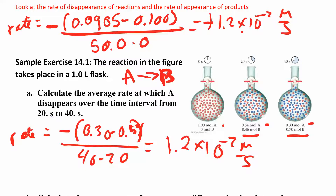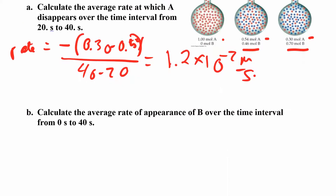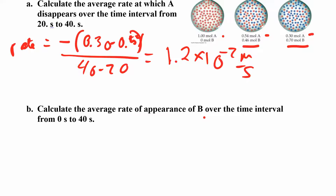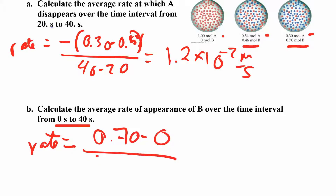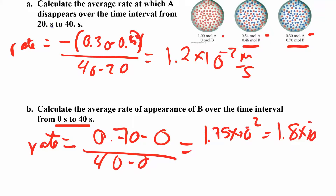Now, the earlier number I gave was wrong — it should be 1.9 × 10⁻⁴. Now let's calculate the average rate of appearance of B over 0 to 40 seconds. Since B is a product, the change in concentration is positive, so we don't need the negative sign. Rate equals (0.70 − 0) / (40 − 0), which gives 1.75 × 10⁻² M/s, which we round to 1.8 × 10⁻² M/s. The units are moles per liter per second, which is molar per second.